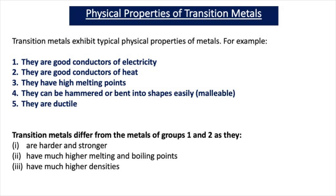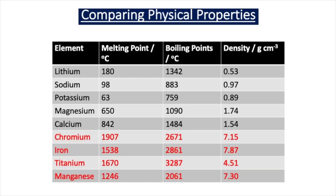In this video we're going to look at the bonding that exists in transition metals and the reasons why they have different properties to the metals of group one and two. This table shows the physical properties of some transition metals compared to group one and two metals. As you can see, the transition metals highlighted in red have higher melting points, boiling points and densities. For example, transition metals tend to have very high melting points — over a thousand degrees C — very high boiling points, and high densities. Transition metals are harder and stronger than group one and two metals, and these differences are down to the bonding.